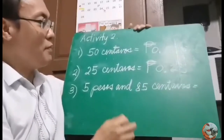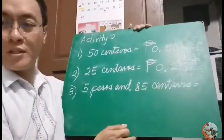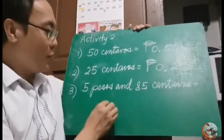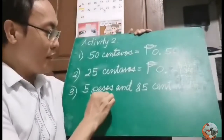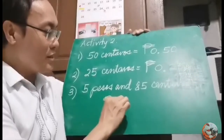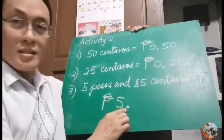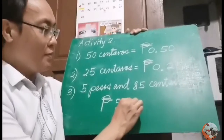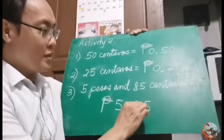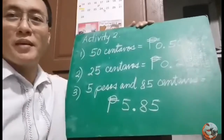How about 5 pesos and 85 centavos? That is the peso sign, 5 pesos, use a decimal point, and then 85 centavos. So this is read as 5 pesos and 85 centavos.